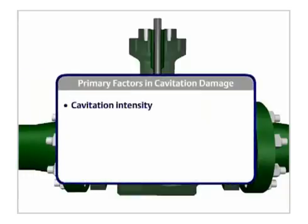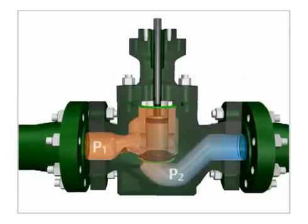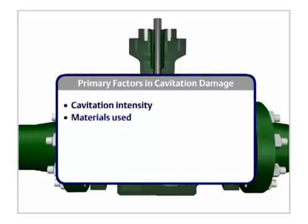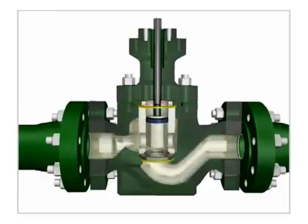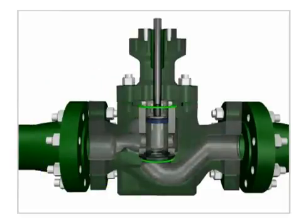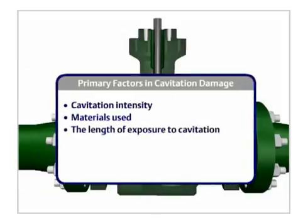The intensity of the cavitation. Greater drops in pressure increase the potential for damage. The materials used in the construction of the area where the cavitation occurs. Hardened materials reduce damage.